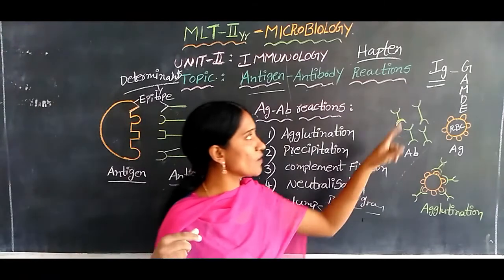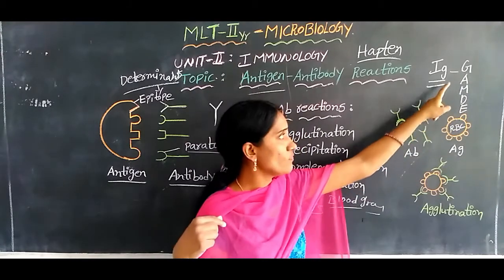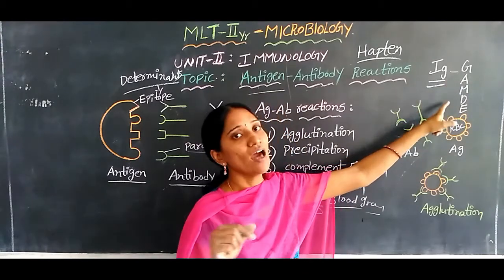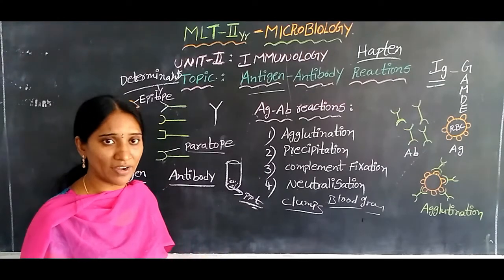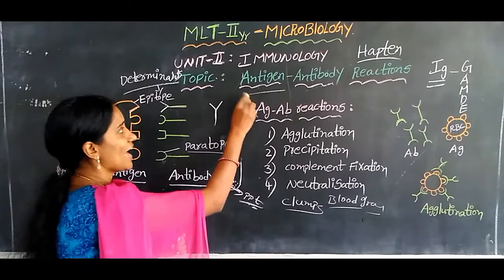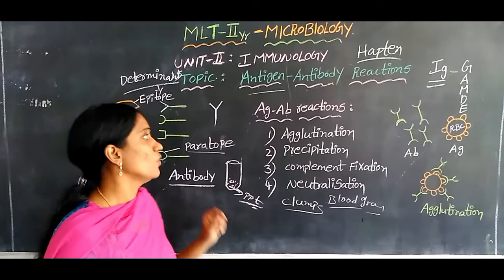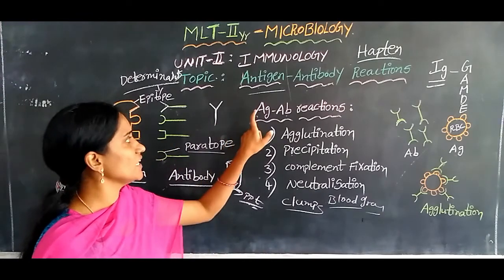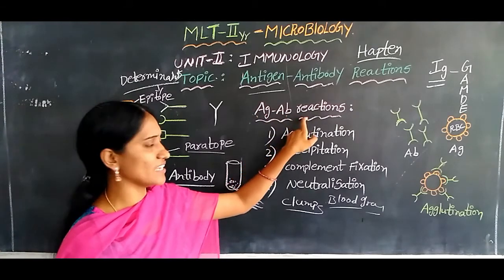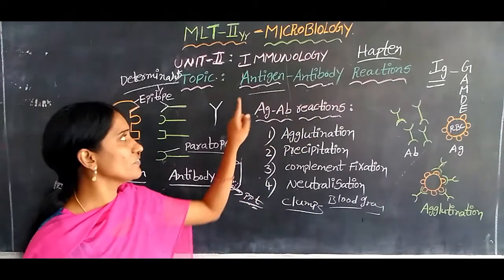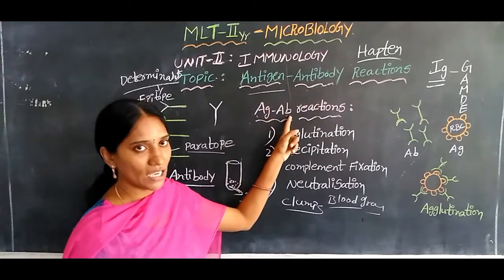These immunoglobulins are five types: G, A, M, D, and E — gamma, alpha, mu, delta, epsilon. These five types are present in our body to fight against antigens. A few antigens are also present in red blood cells. The interaction between antigen and antibody is known as the antigen-antibody reaction, abbreviated as Ag and Ab.